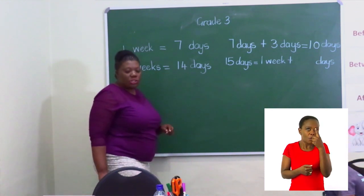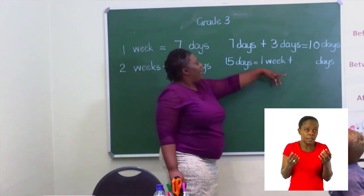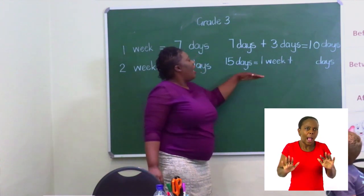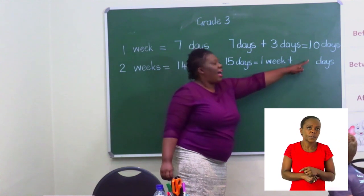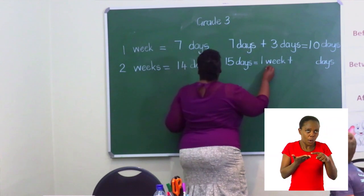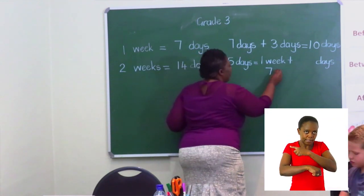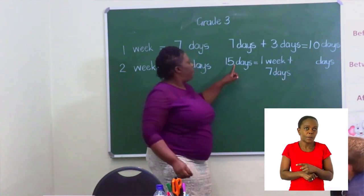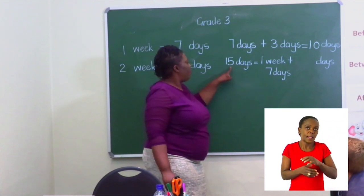On the second question, we've been asked how many days give us one week and how many days are left. If we have 15 days and one week, how many days are left? One week is seven days, so we're going to remove seven from 15.